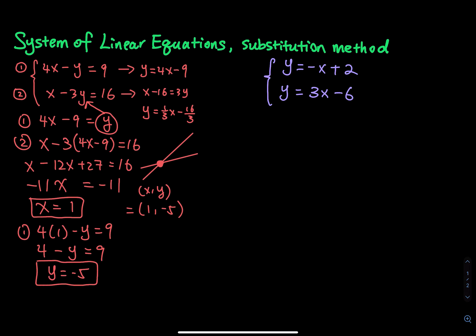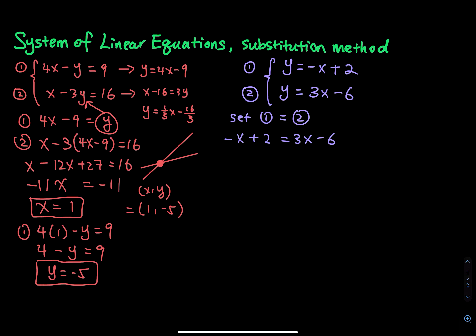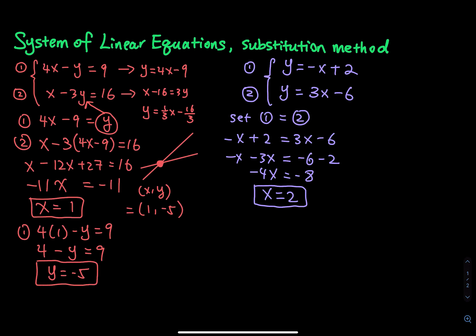The next system — label equation 1 and equation 2. The first equation is y equals negative x plus 2 and the second is y equals 3x minus 6. Since both start with y equals, set them equal: negative x plus 2 equals 3x minus 6. Then negative x minus 3x equals negative 6 minus 2, giving negative 4x equals negative 8, so x equals 2. Plugging in, y equals negative 2 plus 2 equals 0.